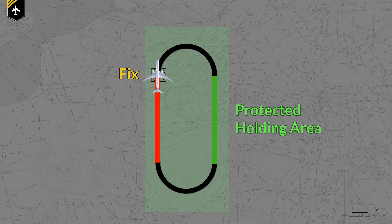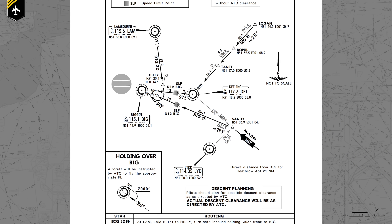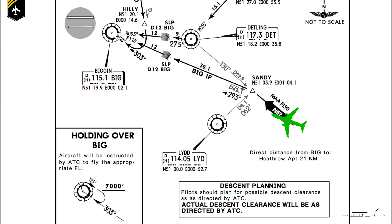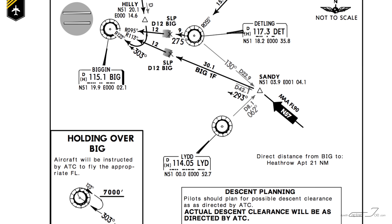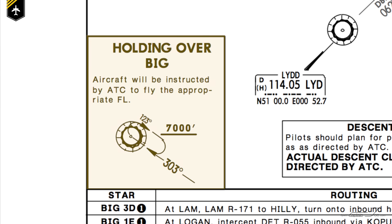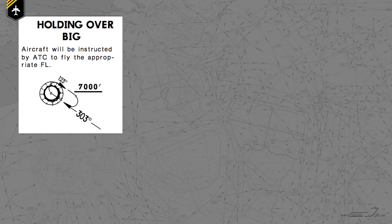This side is the holding side and the other is the non-holding side, and any entry procedure will always keep you within the protected holding area. Looking at this STAR for London Heathrow, let's say we're on a standard arrival Biggin Hill 1 Foxtrot and ATC advises you about the current snow removal situation on runway 27L. He therefore wants you to enter the published holding over Biggin Hill VOR, so you check your chart for the given instructions.